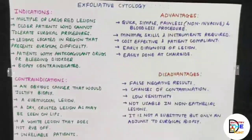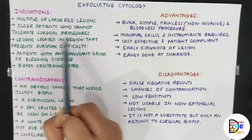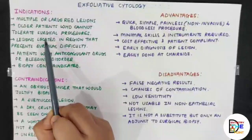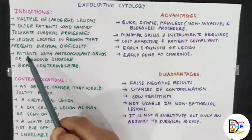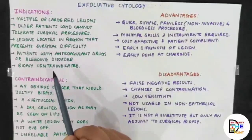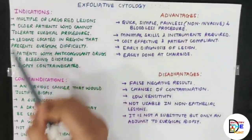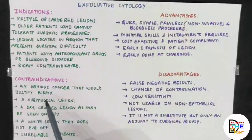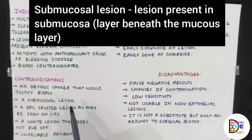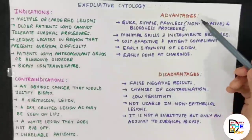Regarding indications and contraindications: exfoliative cytology is indicated for multiple or large red lesions in older patients who cannot tolerate surgical procedures, lesions in regions presenting surgical difficulty, patients on anticoagulant drugs or with bleeding disorders, and biopsy-contraindicated cases. It is contraindicated in obvious cancer that would justify biopsy, submucosal lesions, dry crusted lesions as seen on the lips, white lesions that do not rub off, and unreliable patients.